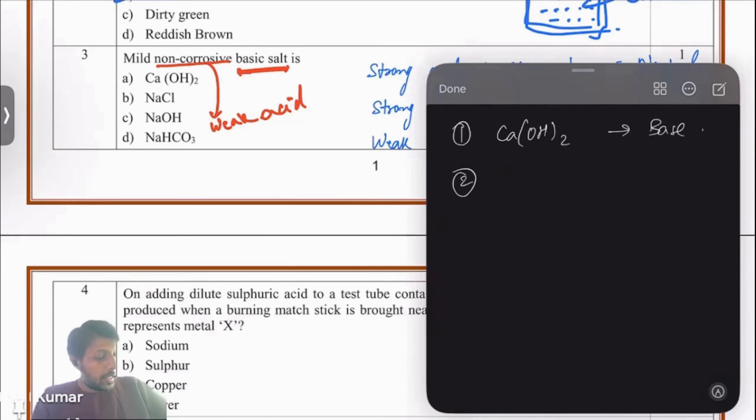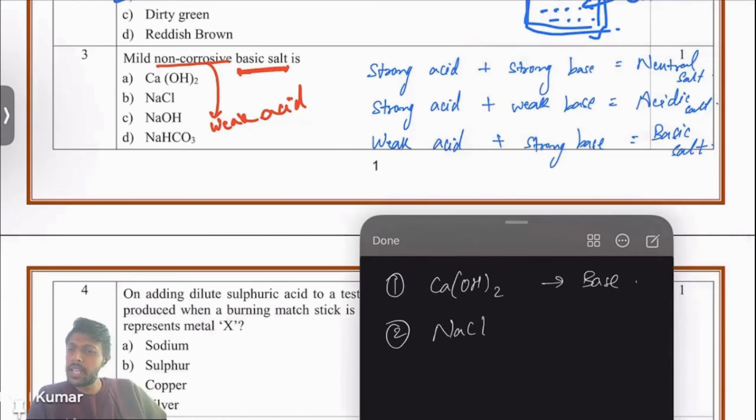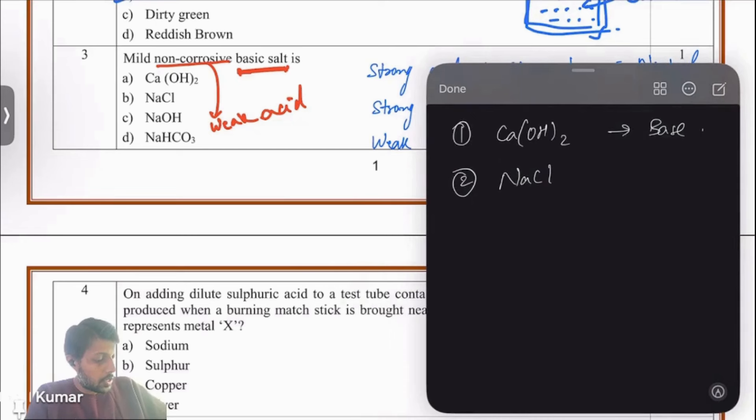Look at the second option, NaCl. It's a salt. Try dissolving this in water. If you dissolve NaCl in water, you are going to get HCl. HCl is a strong acid. If it's made from strong acid, strong acid plus any kind of base is definitely not a basic salt. So this cannot be your answer. About the third one, NaOH, it's a base, not a salt, so you can ignore this also.